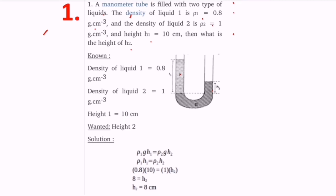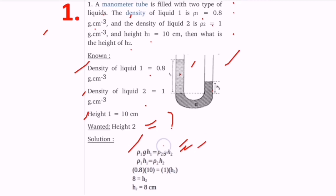According to manometer principles, the left-hand side pipe equals the right-hand side pipe. So the formula is: rho one times g times h1 equals rho two times g times h2. Since g cancels from both sides, we get rho one times h1 equals rho two times h2. Substituting values — rho one is 0.8, h1 is 10, rho two is 1 — we get h2 equals 8 centimeters.